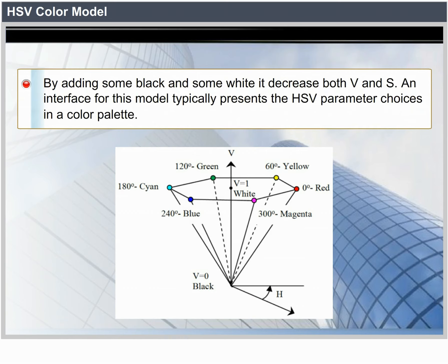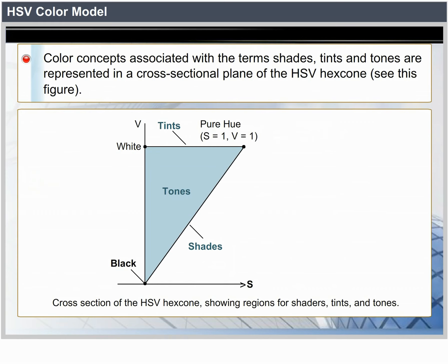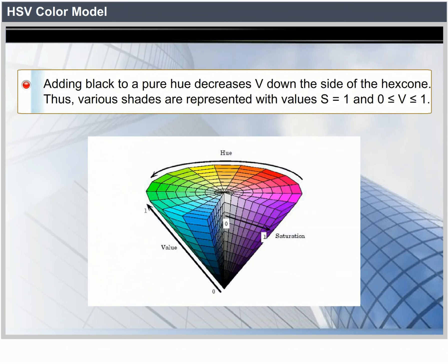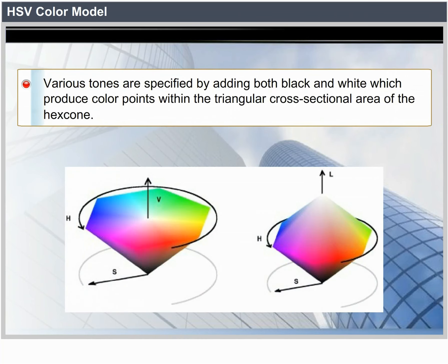An interface for this model typically presents the HSV parameter choices in a color palette. Color concepts associated with shades, tints, and tones are represented in a cross-sectional plane of the HSV hex cone. Adding black to a pure hue decreases V down the side of the hex cone; various shades are represented with S equals 1 and 0 ≤ V ≤ 1. Adding white to a pure hue produces different tints across the top plane of the hex cone, where V equals 1 and 0 ≤ S ≤ 1. Various tones are specified by adding both black and white, producing color points within the triangular cross-sectional area of the hex cone.